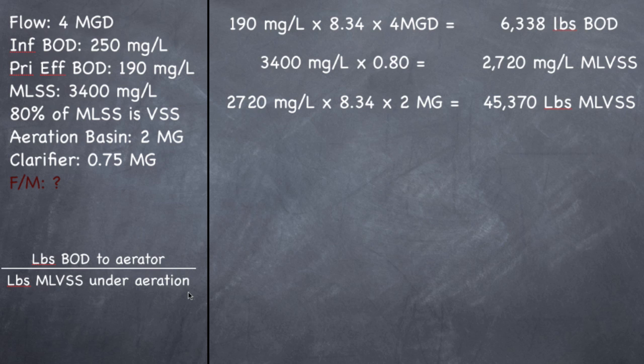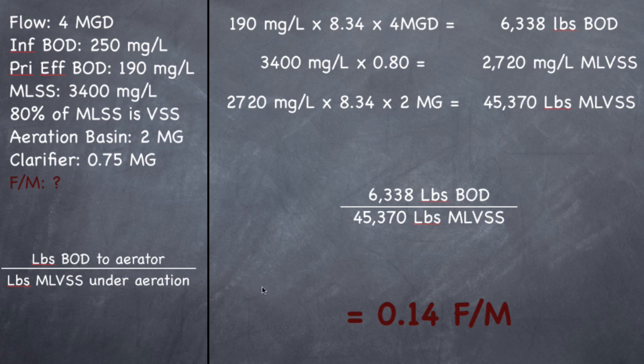All right. So we figured out this top part, and we figured out this bottom part. Now let's throw it all together and actually solve the problem. So I have 6,338 pounds of BOD divided by 45,370 pounds of MLVSS. And that should give me an F/M of 0.14.